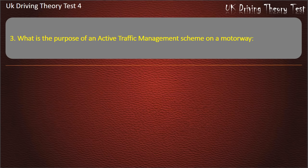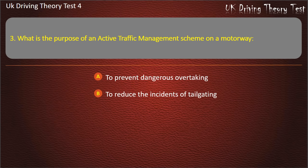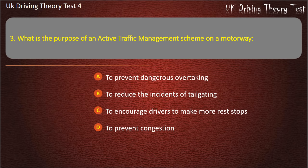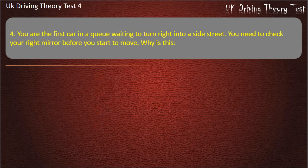Question 3. What is the purpose of an active traffic management scheme on a motorway? To prevent dangerous overtaking; to reduce the incidence of tailgating; to encourage drivers to make more rest stops; or to prevent congestion. Answer: To prevent congestion.